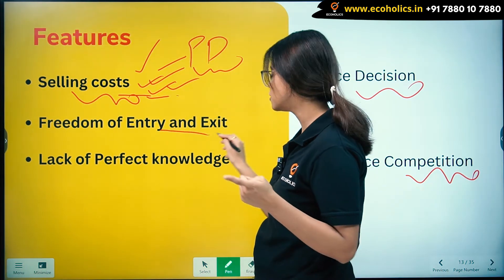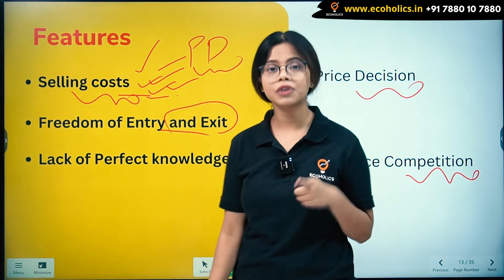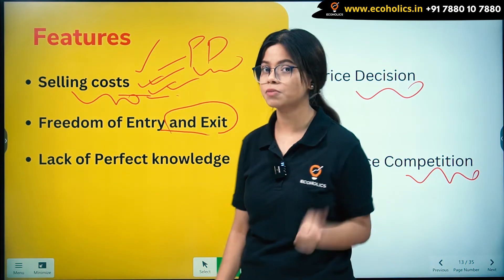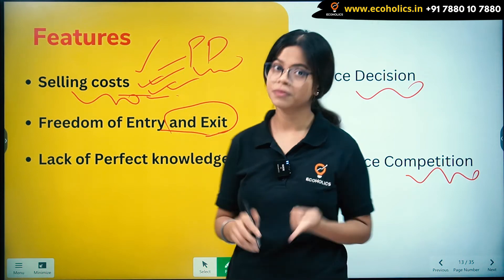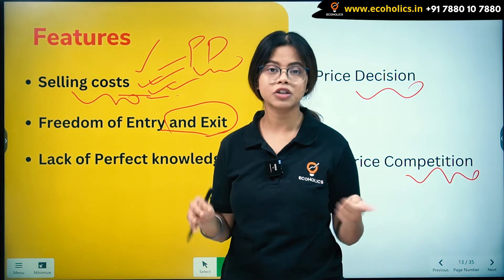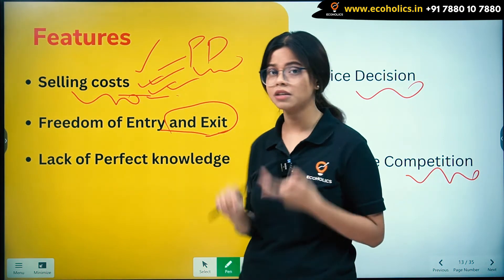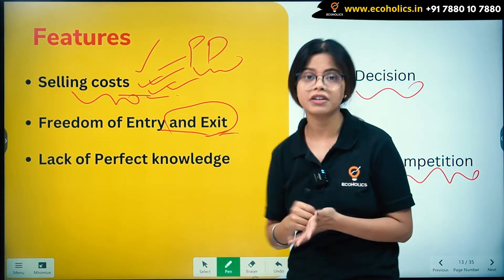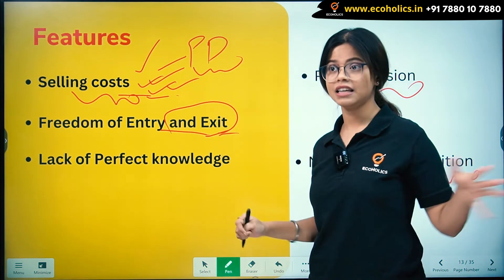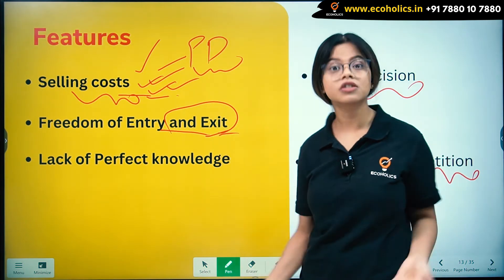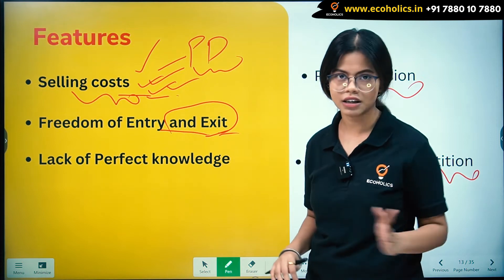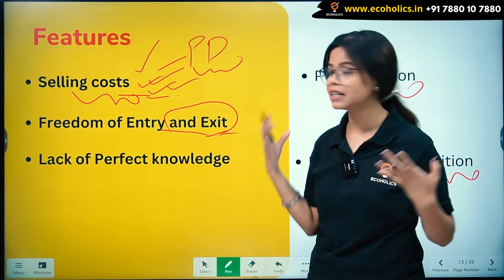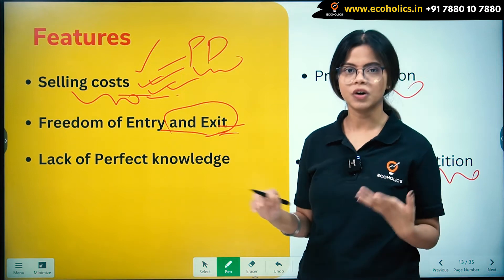Next is freedom of entry and exit. There is freedom of entry and exit, but it is not as free as in perfect competition. Since monopolistic competition is a mixture of both monopoly and perfect competition, entry and exit is not as restricted as monopoly, but it is also not completely free — people can still enter and exit the market.